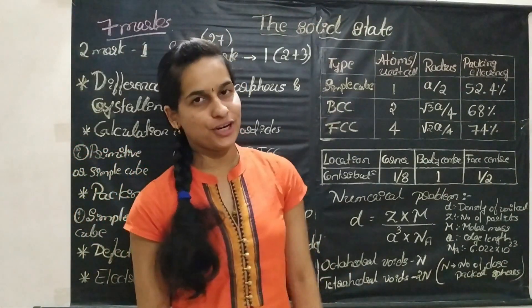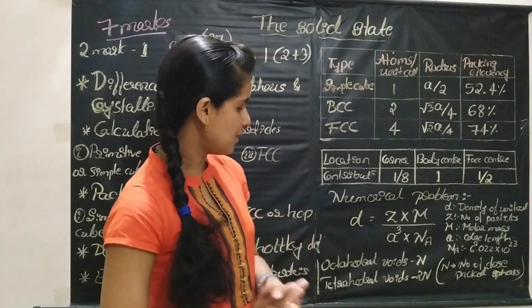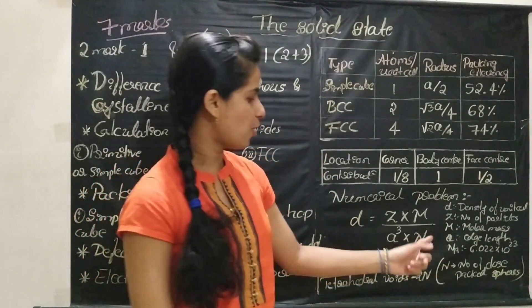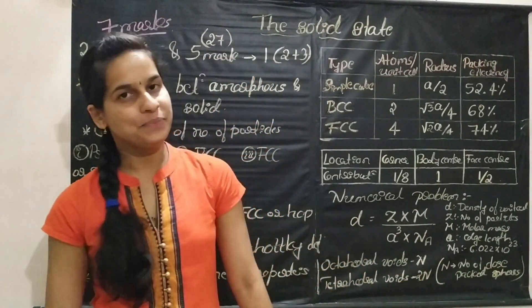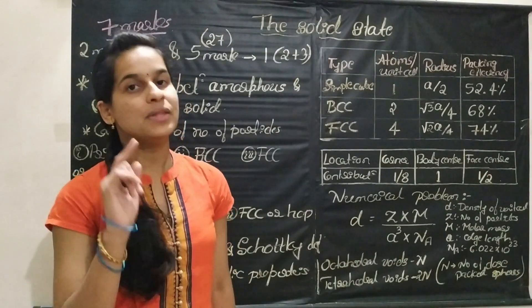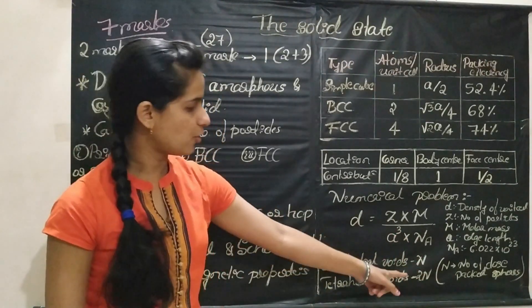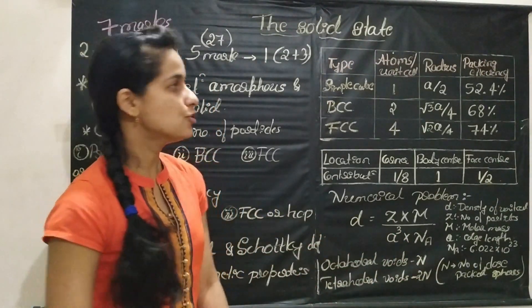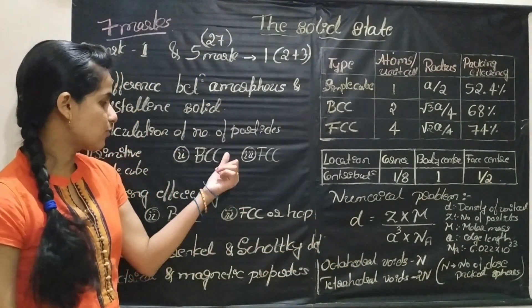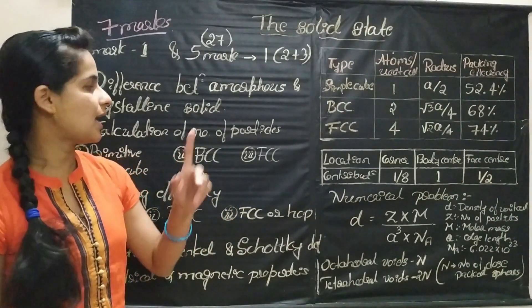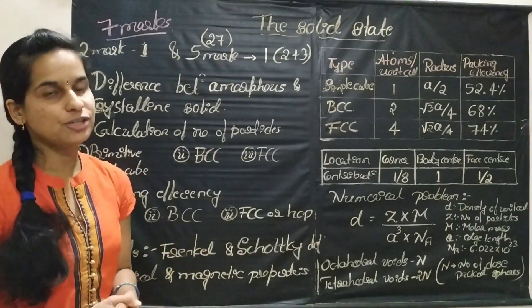Then, about number of voids. If N is the number of close-packed spheres, then the number of octahedral voids formed is equal to N, and tetrahedral voids formed will be 2N. From this chapter, one numerical or calculation of packing efficiency for 3 marks and calculation of number of particles for 2 marks is a definite question.